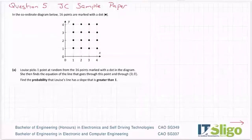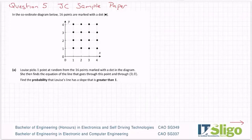Let's have a look at question five. In the coordinate diagram below, 16 points are marked with a dot. Louise picks one point at random from the 16 points marked with a dot in the diagram. She then finds the equation of the line that goes through this point and through zero, zero. Find the probability that Louise's line has a slope that is greater than one.